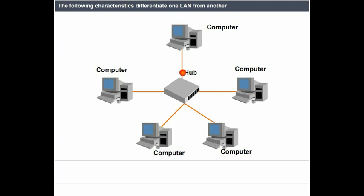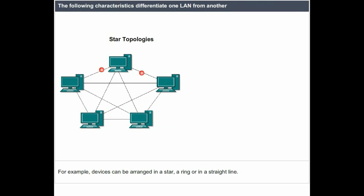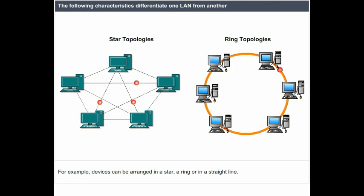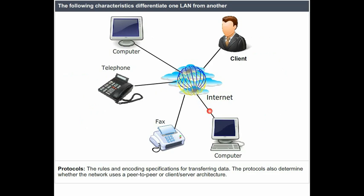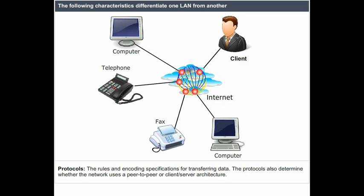The following characteristics differentiate one LAN from another. Topology is the geometric arrangement of devices on the network; for example, devices can be arranged in a star, a ring, or in a straight line. Protocols are the rules and encoding specifications for transferring data. The protocols also determine whether the network uses a peer-to-peer or client-server architecture.